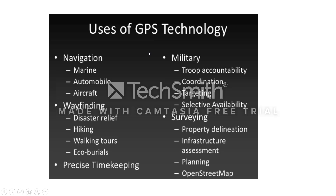Here we have a slide mentioning the different uses of GPS. It is mainly used for navigation — marine (sea), automobile (land), and aircraft, including finding lost aircraft. Other uses include way finding, hiking, disaster relief (locating people stuck in disastrous situations), walking tours in unknown places, and eco burials. Then we have military applications such as troop accountability and coordination targeting. These are the different application areas for GPS technology.